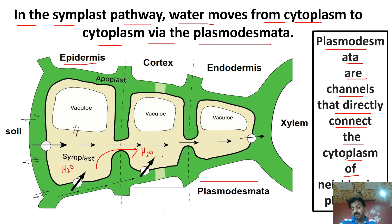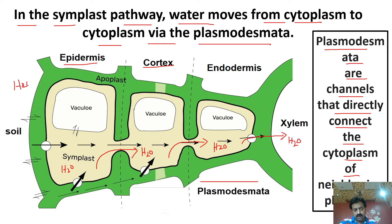Epidermis سے cortex تک symplast pathway میں پانی نے plasmodesmata کو cross کیا۔ Cortex سے endodermis تک بھی symplast pathway یہی ہوا، اور پھر پانی xylem کی طرف چلا گیا۔ Vacuolar pathway اور symplast pathway میں فرق یہ ہے: vacuolar pathway میں پانی ہر مرتبہ vacuole کو cross کرتا ہے، مگر symplast pathway میں پانی vacuole کو cross نہیں کرتا — direct cytoplasm سے دوسرے cell کے cytoplasm میں plasmodesmata کے through چلا جاتا ہے۔ پانی ہمیشہ move کرتا ہے osmosis کے ذریعے۔